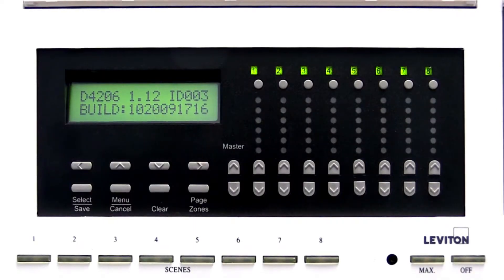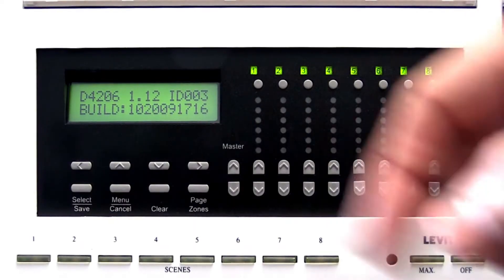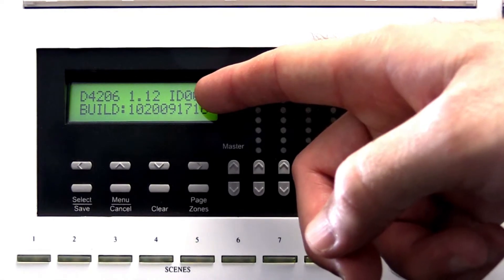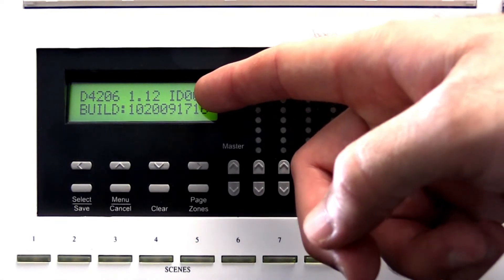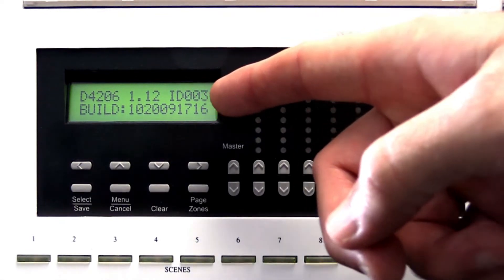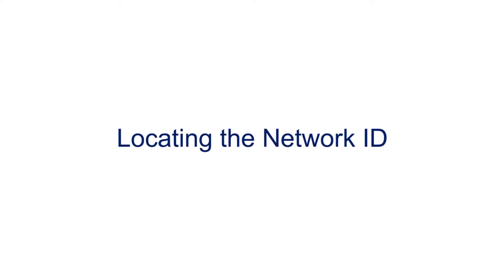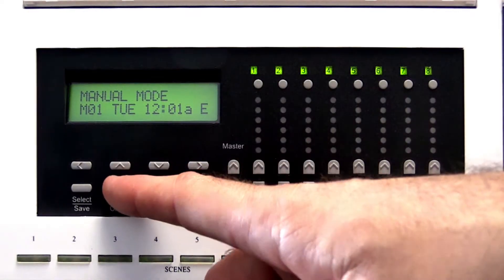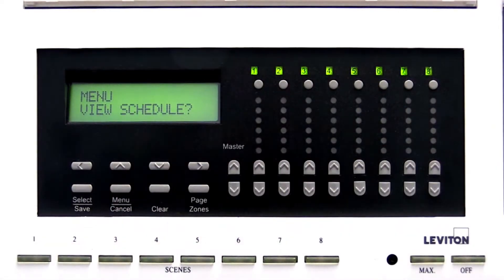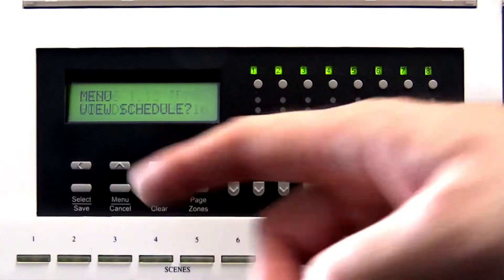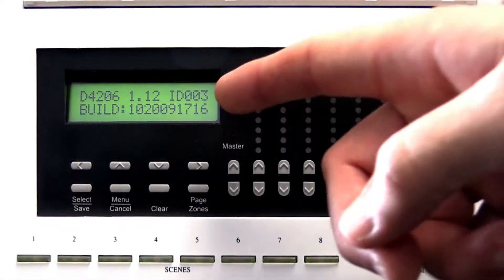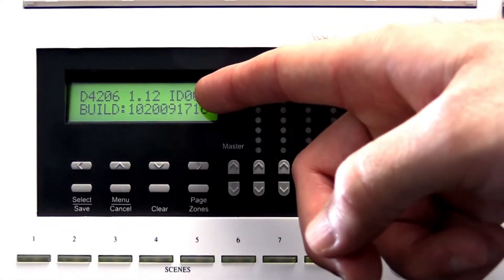In this video we will show you how to locate, set, and change the network ID for a D4000 series master station. To locate the network ID, press the menu cancel button and then press the up arrow. The LCD screen will display the network ID.